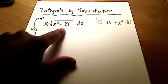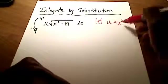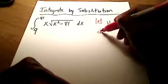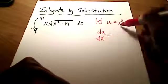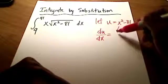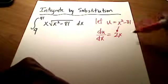You're going to see why I'm picking on that in just a second here. So if u is equal to x squared minus 81, then what's the derivative of u with respect to x? Well, the derivative of x squared is just 2x, and the derivative of negative 81, that's just a constant, is zero.